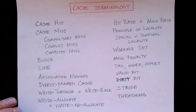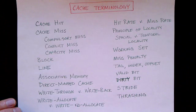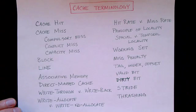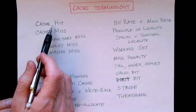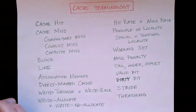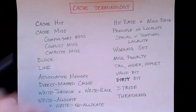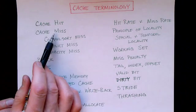If we can get the data that the program needs into cache, then when the CPU wants that data, there's a cache hit — the data we want is in the cache memory. If the data that the CPU needs is not in the cache, then that's a cache miss.